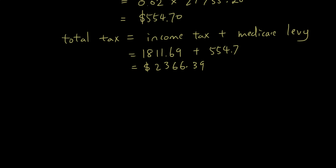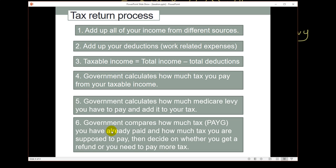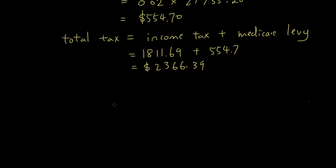Okay, the last step in the tax return process. You must be so happy to get here. Government compares how much tax you have already paid and how much tax you're supposed to pay and decides whether you get a refund or whether you need to pay more tax. So how much tax you have already paid, which is PAYG, will usually be given to you in the question.